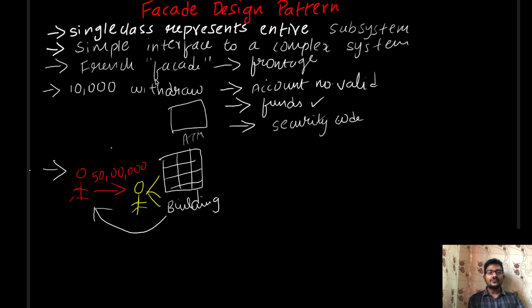So first, what is a facade? In French, facade means front edge. Whatever you see is called facade. The main motto behind the facade design pattern is simple interface to a complex system. The system can be complex, but you need a simple interface to operate the operations.